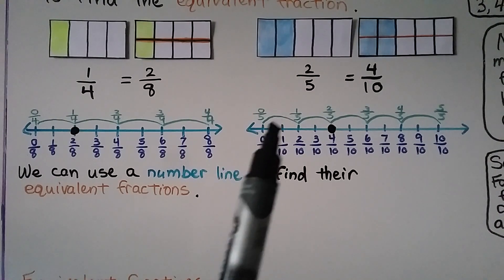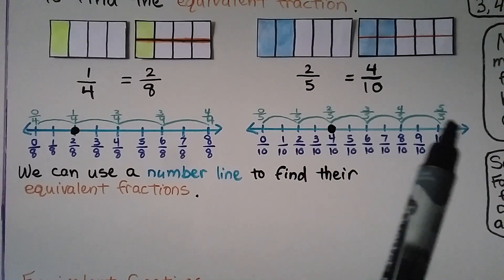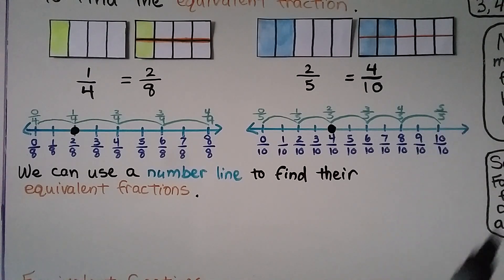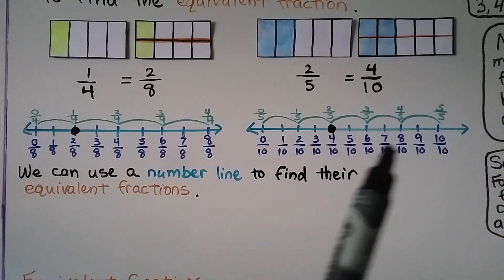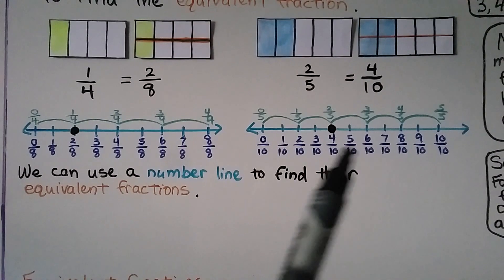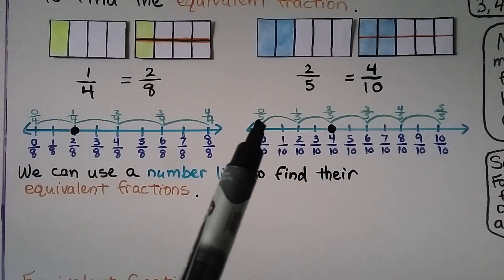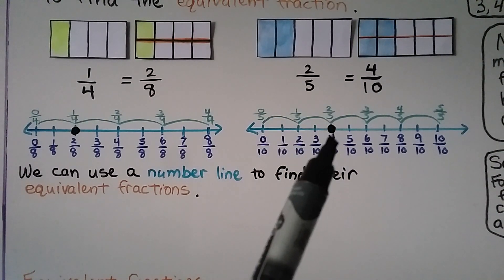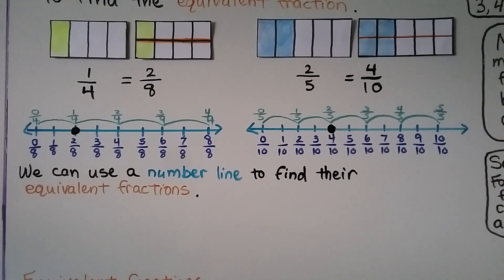Here we have the top of the number line split into five equal parts, going from zero to one whole as five-fifths. And underneath here, we've got it split into ten equal parts. We can see that two-fifths is the same point on the number line as four-tenths. They're equivalent fractions.